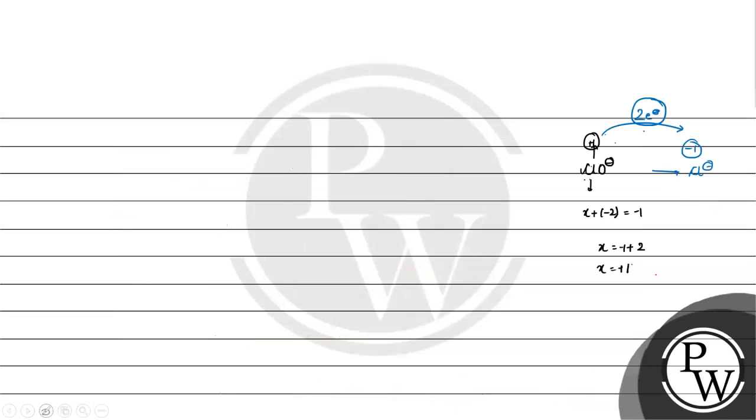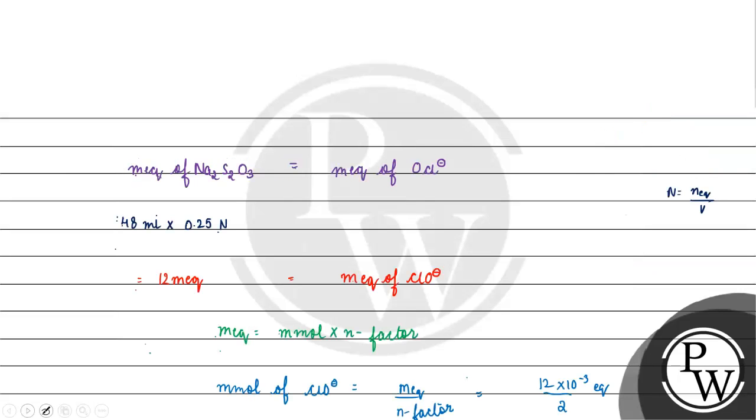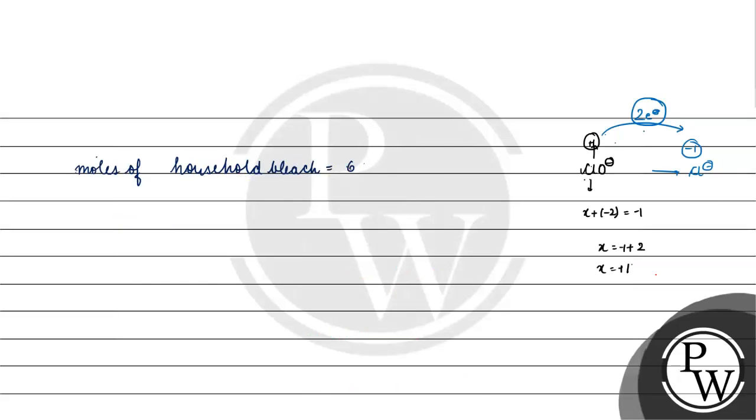Now for millimoles, moles of ClO-, or moles of household bleach, will be equal to 6 into 10 to the power minus 3 moles.